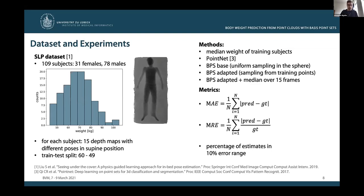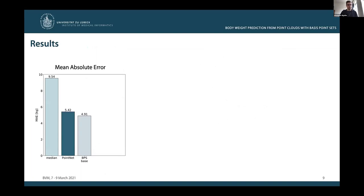Let's check out the results and start with the mean absolute error. Here we see the MAE of median and PointNet baseline compared to the base version of basis point sets. We observe that already this base version almost halves the error of the median baseline and considerably outperforms PointNet by around 500 grams. Replacing the base version by our proposed adapted sampling scheme yields a further improvement of around 220 grams. And finally, taking the median over 15 frames further reduces the MAE by around 500 grams to around 4.2 kilograms.